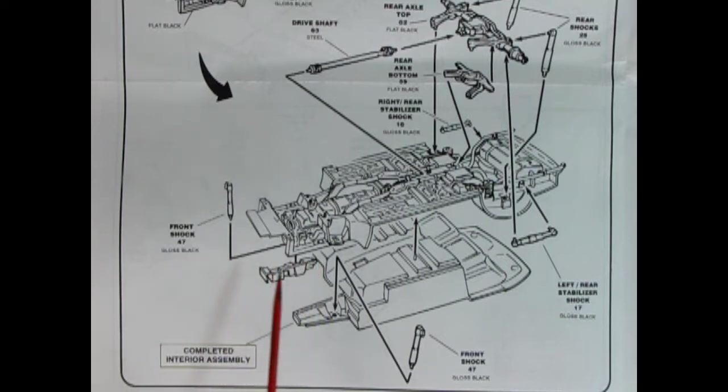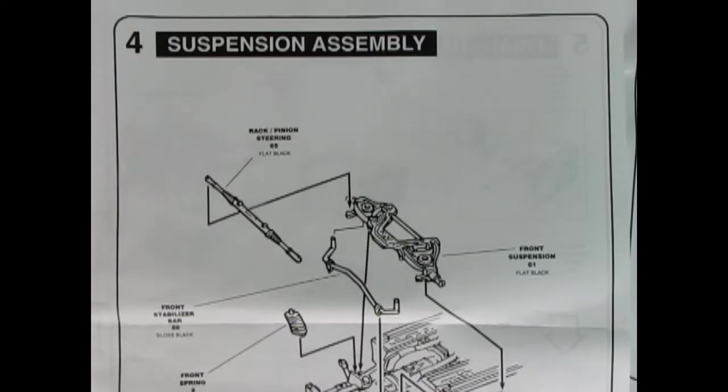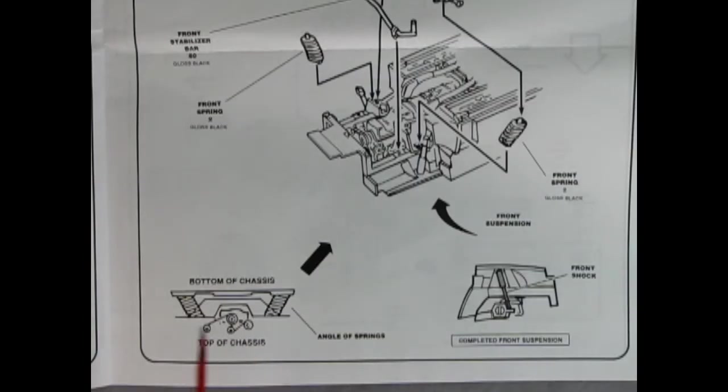In panel four we see our suspension assembly and here we've got our front suspension unit dropping in place. We've got the front springs that go in first of course and our front stabilizer bar and then the rack and pinion steering unit. Down here at the bottom of the page it shows how the bottom of the chassis and the angle of springs, that's up in here and over here we also see our front shock absorber where it's supposed to go in the wheel arch and that's shown here.